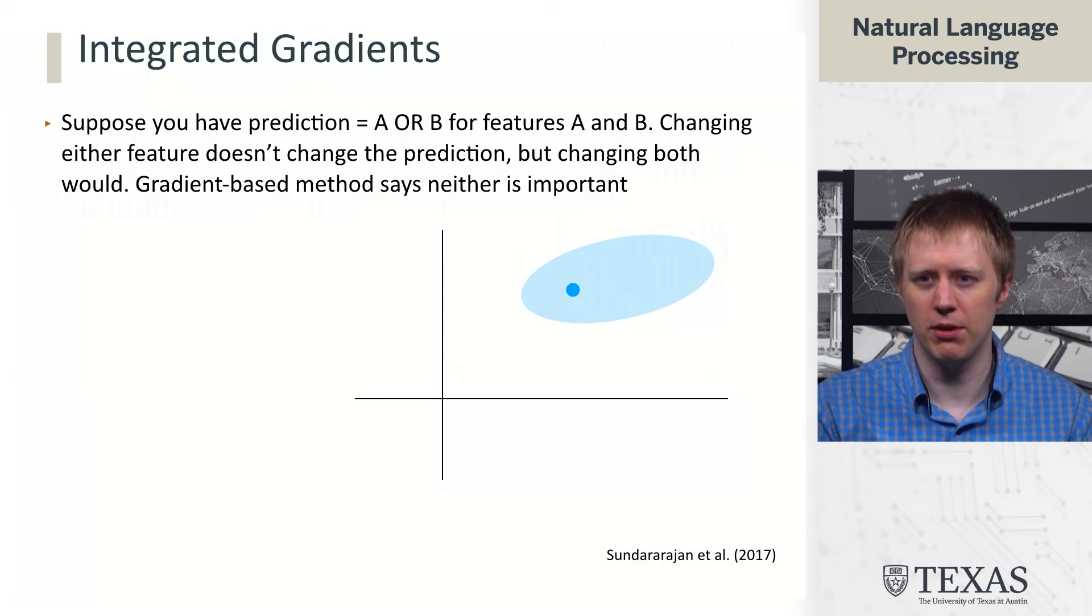So we can look at this and say, well if we changed A or if we changed B, neither of those actually is contributing very much to the prediction.